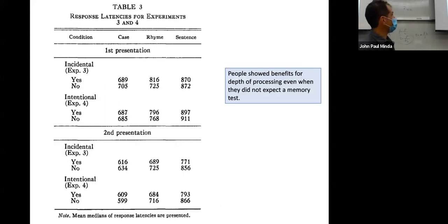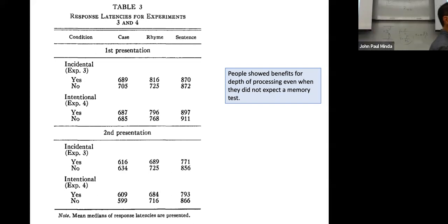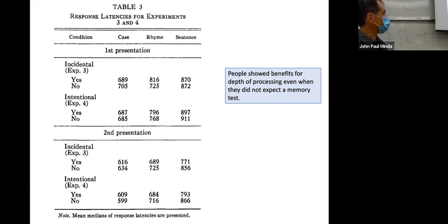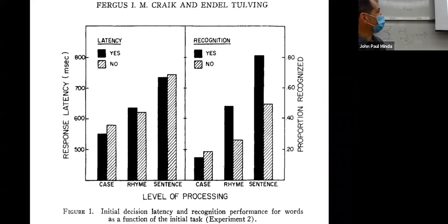In two of their experiments, subjects were presented with the list of words with questions, but half of the subjects were not told to memorize them at all — not told to learn them for recognition or recall. This is the incidental condition — you just learn the words by answering questions, never told about a memory test. At the end of the experiment they're asked: do you recognize these words? And they show the same general effect — still showing the recognition advantage for deeper processing levels.